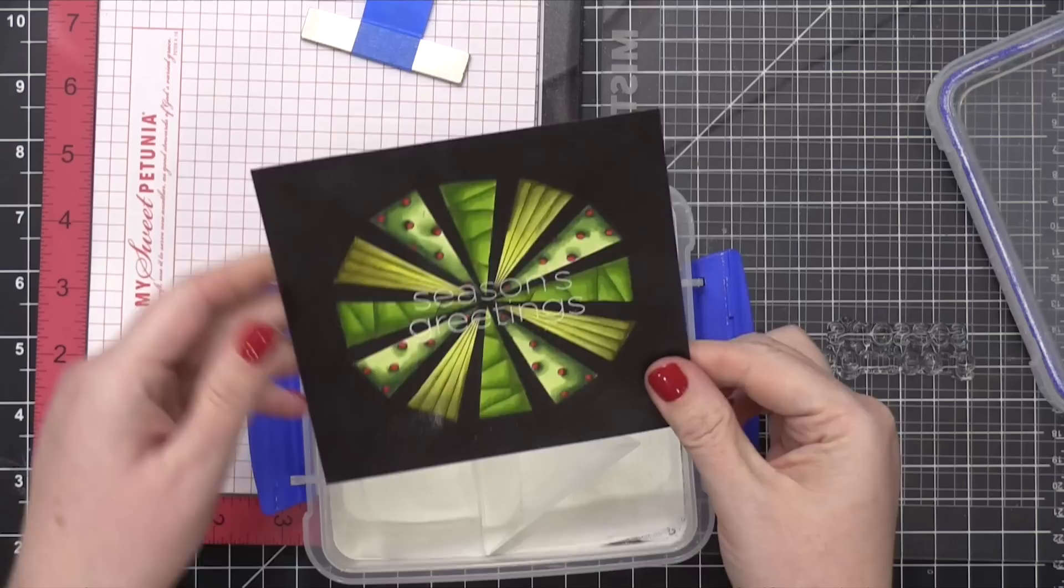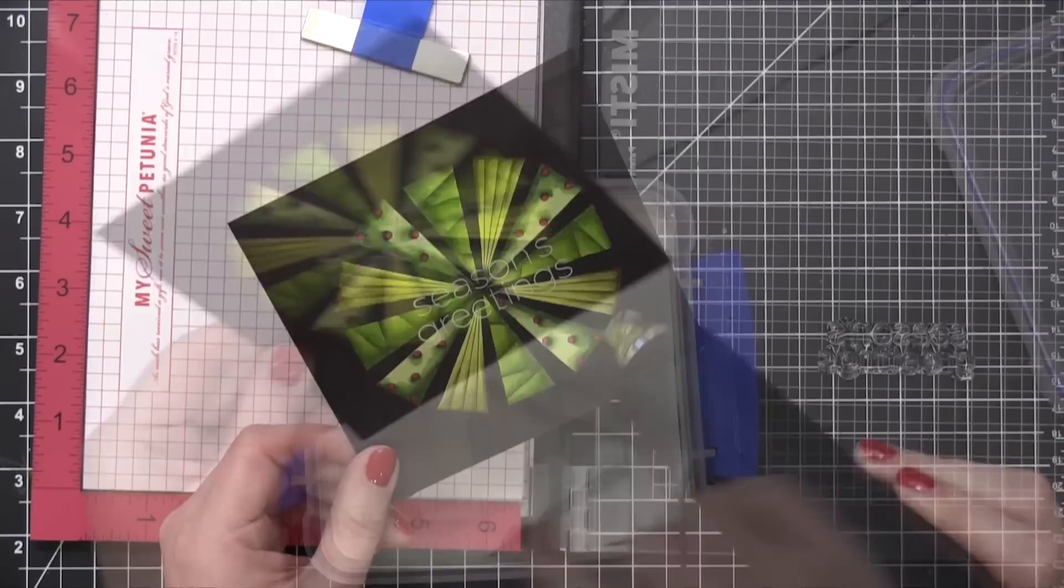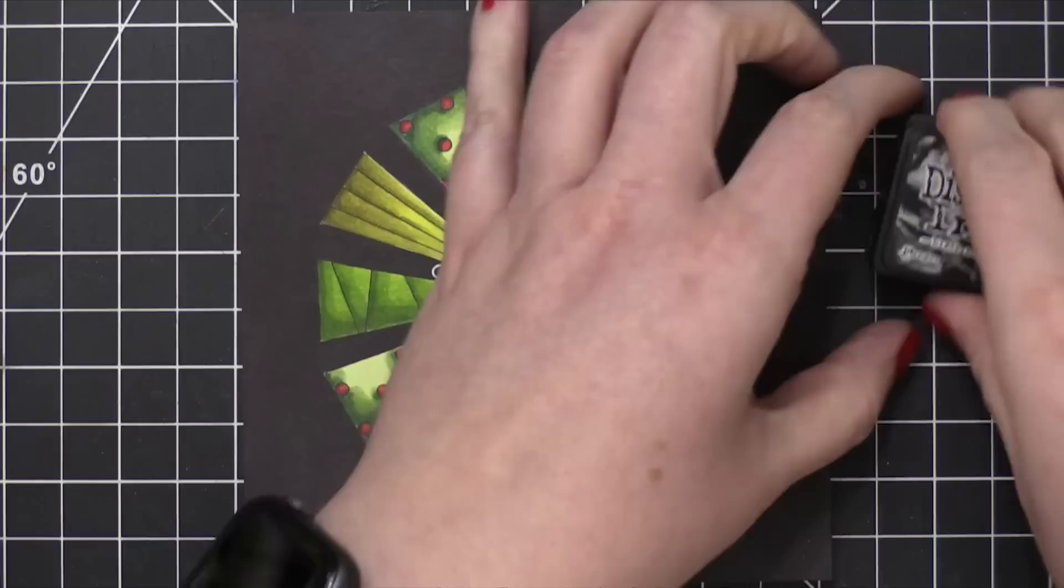The type is very thin and dainty, so I didn't want to press too hard on my MISTI door, and because of that, I stamped it twice to make sure that I had a really good impression. I then sprinkled on some Brutus Monroe Alabaster Embossing Powder, and then hit that with my heat tool.